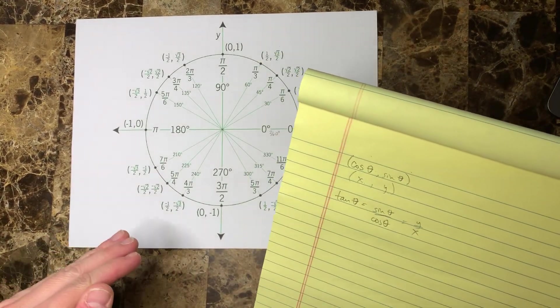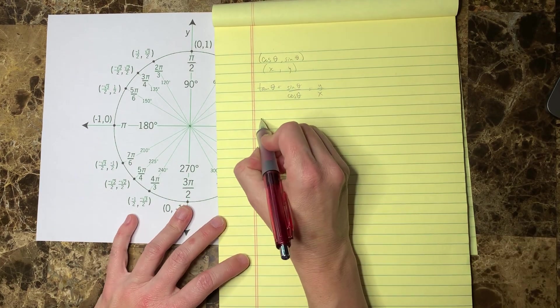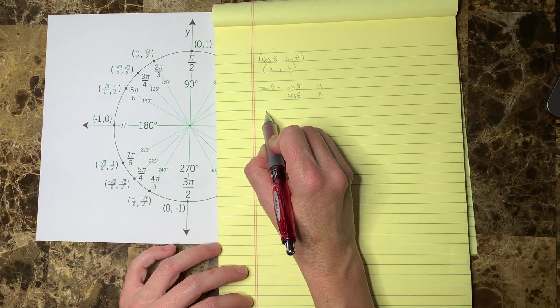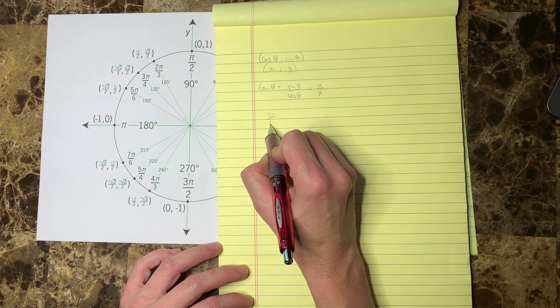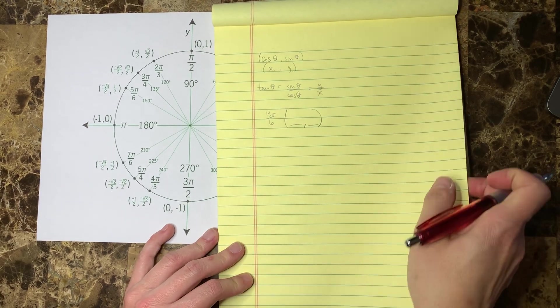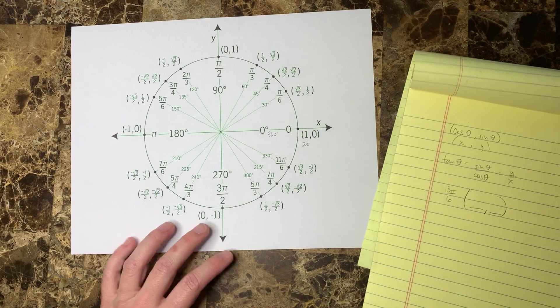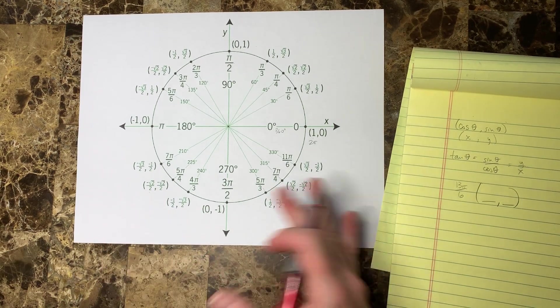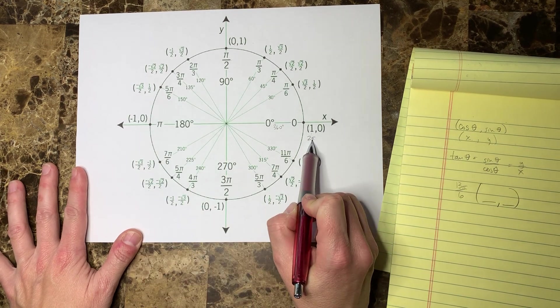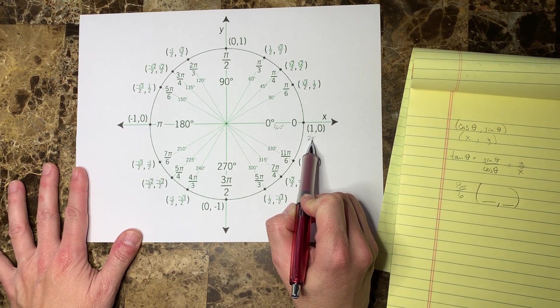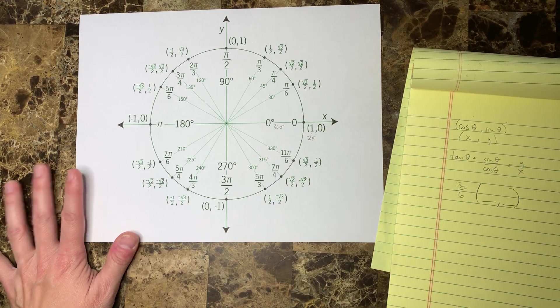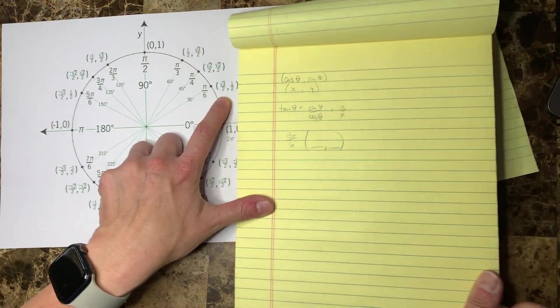Let's say that I wanted you to give me the ordered pair for 13π/6. So I'm looking for the x part and I'm looking for the y part. I'm looking on my unit circle, I'm not seeing 13π/6 anywhere, but I do know that if I go all the way around this is 2π or 12π/6. So 12π/6 plus one more π/6 is 13π/6, so the ordered pair would be (√3/2, 1/2).